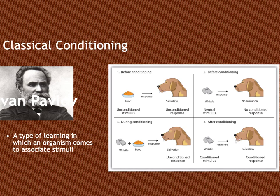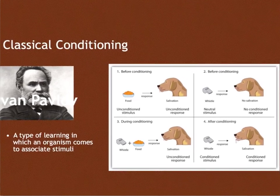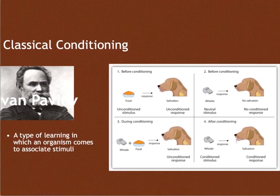For example, in Ivan Pavlov's classic experiment of conditioning dogs to salivate to a bell, what Ivan Pavlov did is he introduced food to the dog, as we see here.